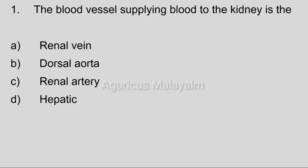First question: The blood vessel supplying blood to the kidney is — Option A: renal vein, Option B: dorsal aorta, Option C: renal artery, Option D: hepatic. Correct answer: Option C, renal artery.